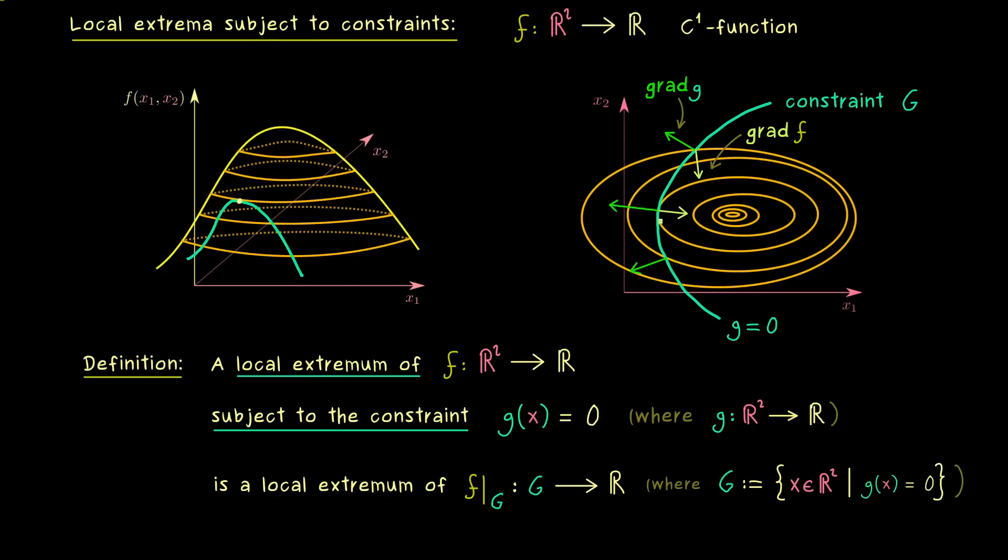And there we see, we cannot increase the value of the function f here by changing the point a little bit in any direction. In other words, there we have found our local maximum. It's exactly the point here on the left-hand side that has the maximal altitude. Hence now we have found our new necessary condition for local extrema.